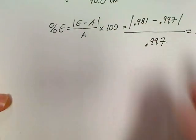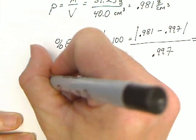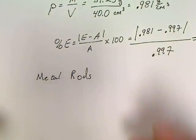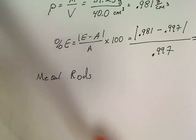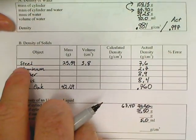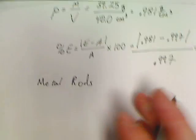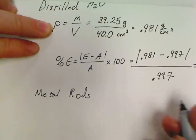And then likewise, I'm going to move down the list. Next thing, I'm going to have metal rods. I'm going to take a look at those calculations next. Alright, so for my metal rods, I'm going to look at my first one. I had a piece of steel. So what was my density for steel? Well, once again, all I'm going to need is mass divided by volume.